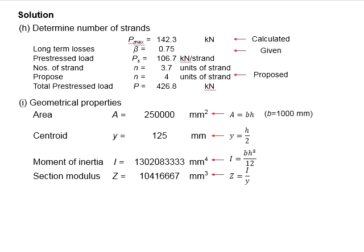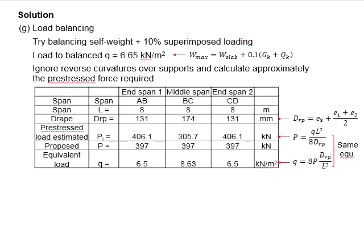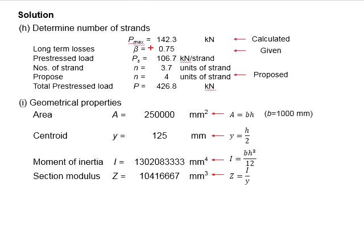Our next step is to determine the number of strands. It was proposed to have the prestressing force be 397 throughout the member, where the maximum allowable jacking force is 142.3. Taking into consideration the long-term losses, the effective prestressing force will be 106.7 kilonewtons per strand. Use this as a basis to determine the total number of strands to achieve that 397 kilonewton proposed prestressing load. The number of strands is calculated as 3.7 units, which sets the boundary that the number of strands cannot be less than this.